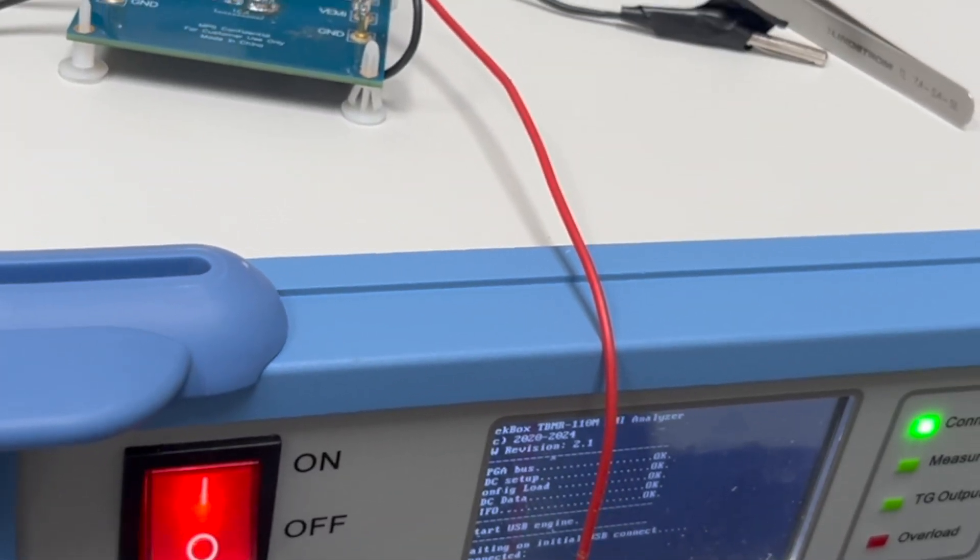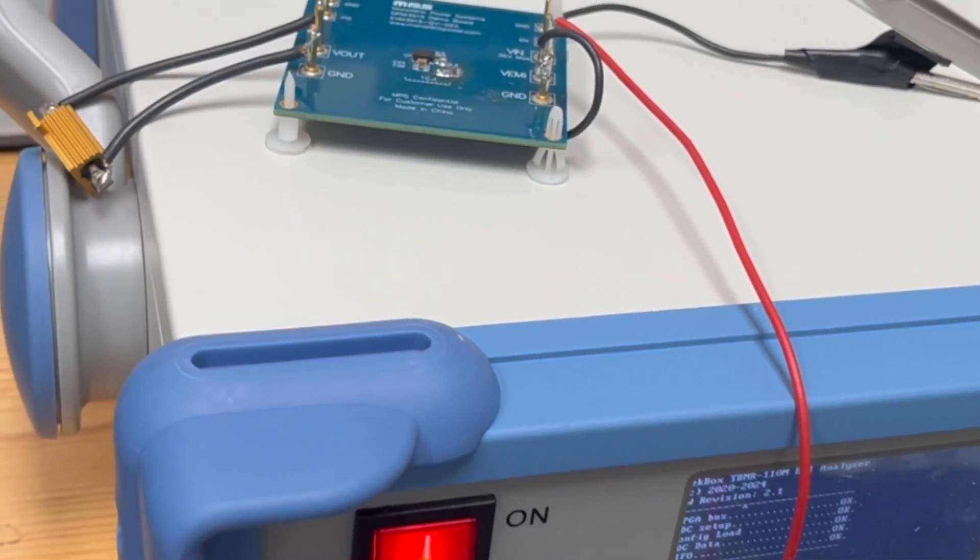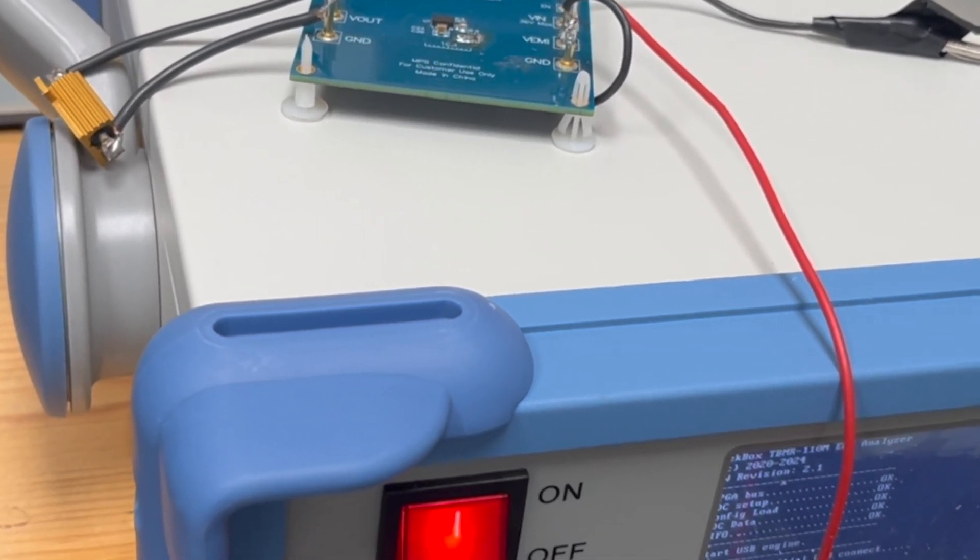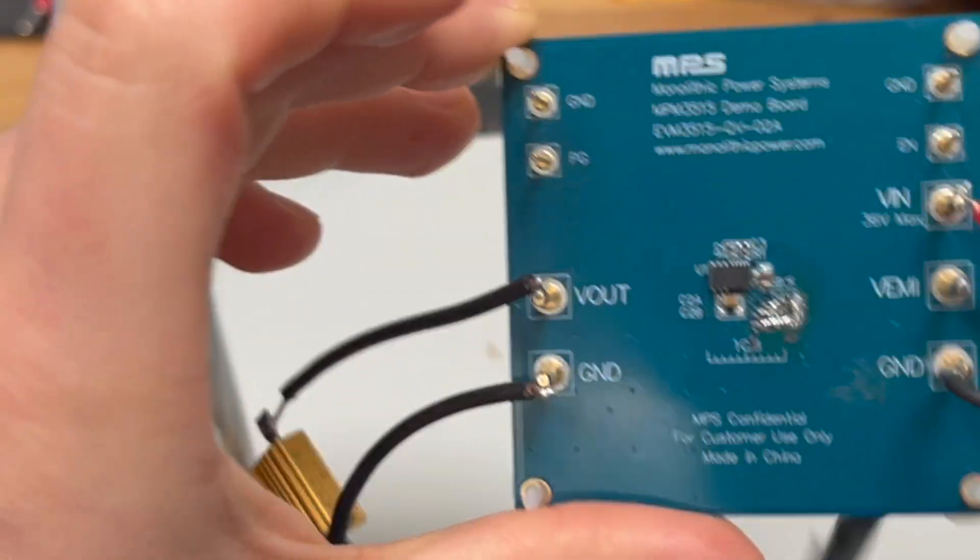For today's test, I'm actually going to use the receiver from TechBox because it has an FFT function, which makes scanning take seconds, so I can quickly compare. Anyway, the main character is this one. Let's test this first.